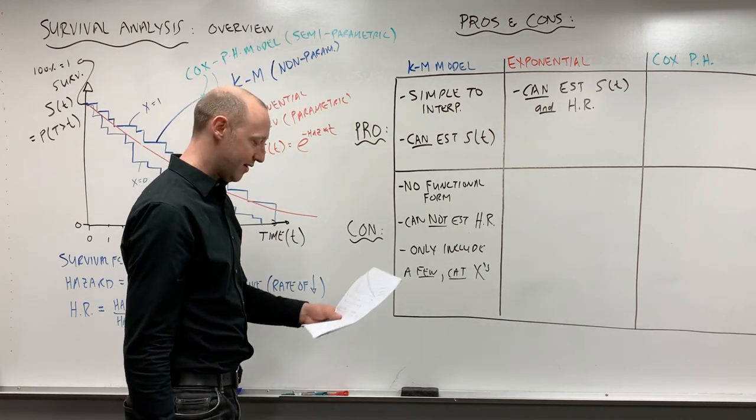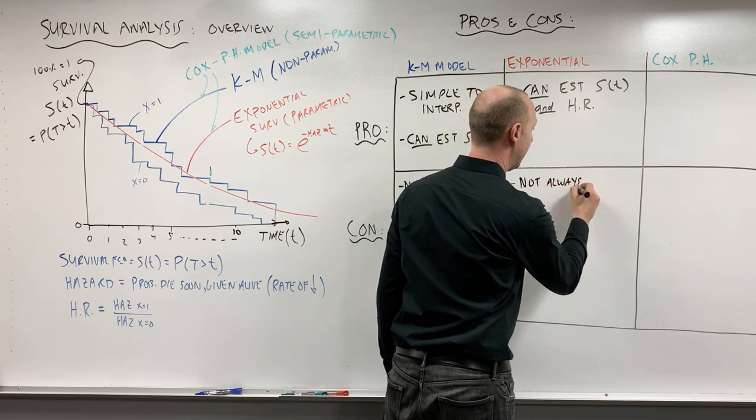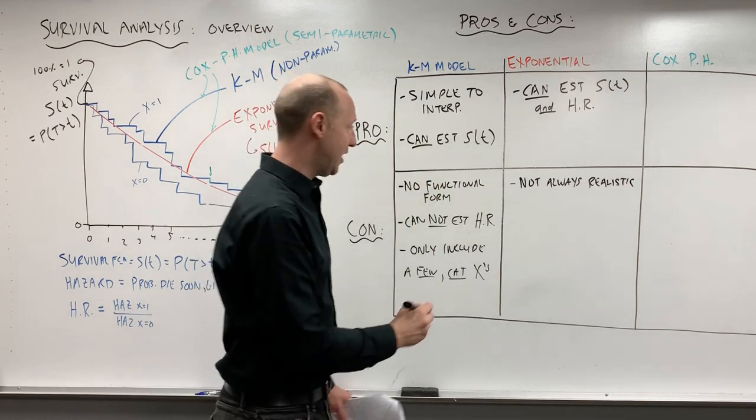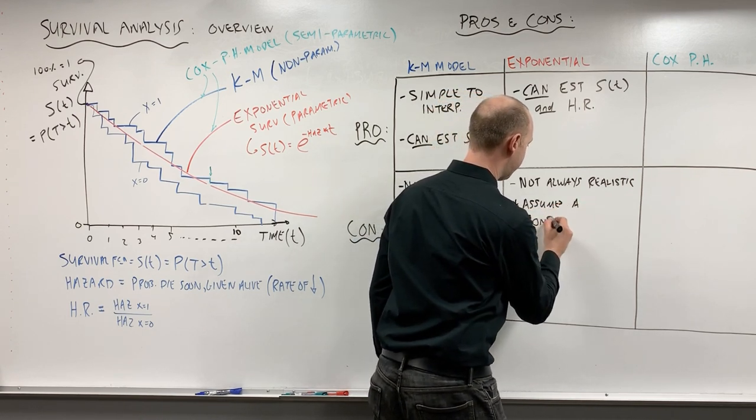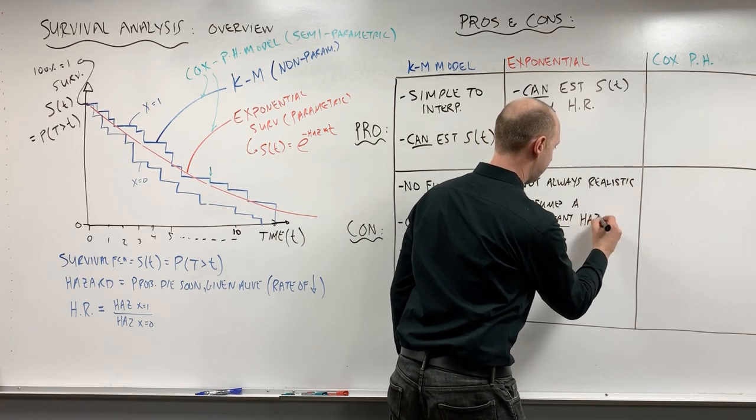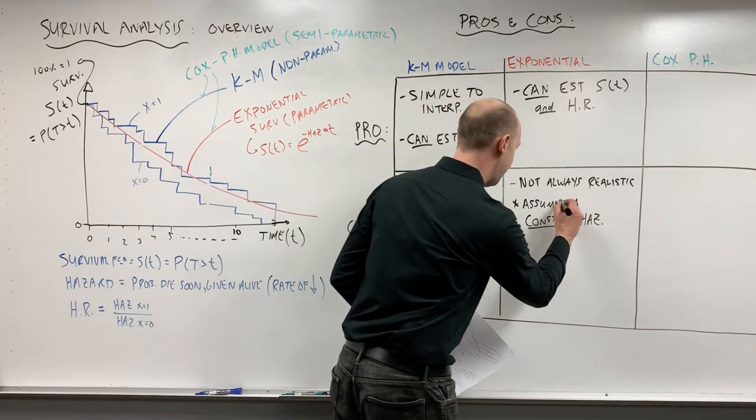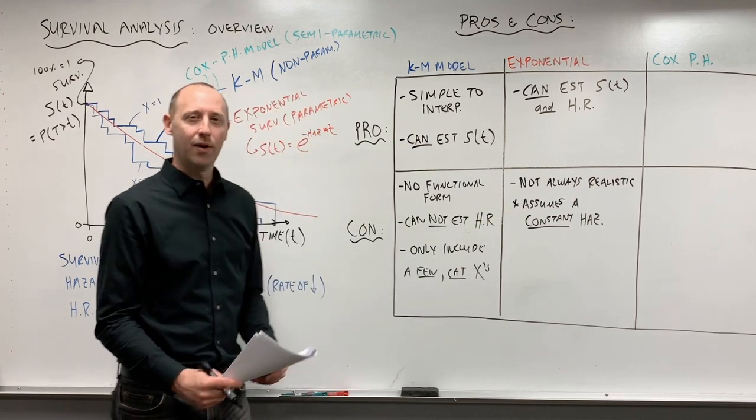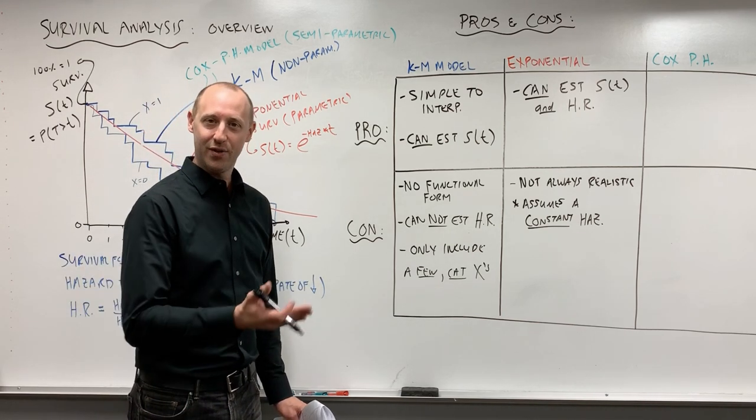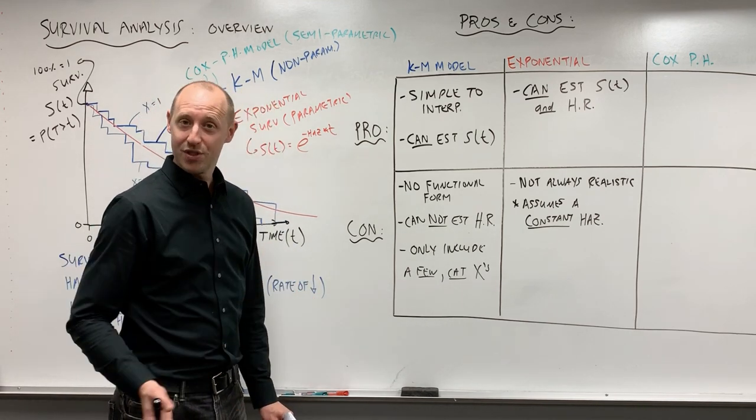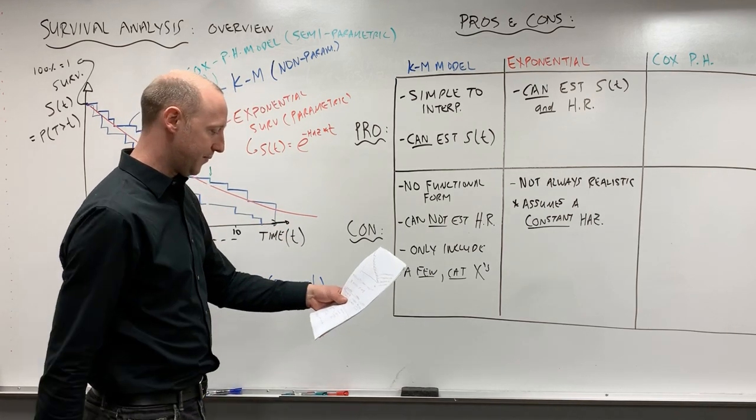So at first it seems like the exponential model gives us everything we want, but its biggest con or limitation is that it's not always realistic. The exponential model assumes a constant hazard - it assumes the rate of decrease of this curve is constant. Now, when we're looking at humans and human populations, this is not a very realistic assumption. What happens to our risk of dying, even without any illness, what happens to our hazard as we age? It slowly increases. As we get older, our risk of dying slowly increases. It's not constant. So the exponential model does not allow for aging or hazards to decrease as time goes by.